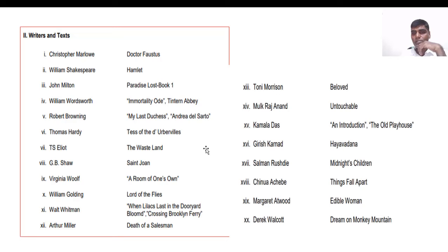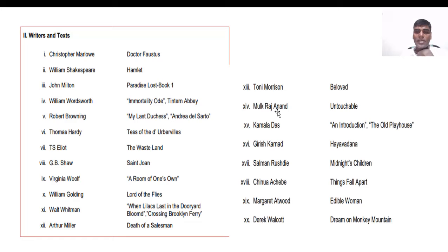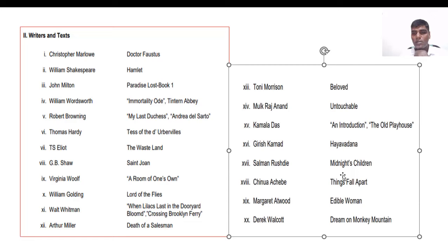Mulk Raj Anand's Untouchable is influenced by Gandhiji's ideas and depicts the life of untouchables and their suffering in society. I suggest going through two or three analyses from sources like SparkNotes, CliffsNotes, or GradeSaver. Kamala Das's two poems — An Introduction and An Old Playhouse — are mostly autobiographical. Girish Karnad's Hayavadana is one of the famous modern dramas in English literature.